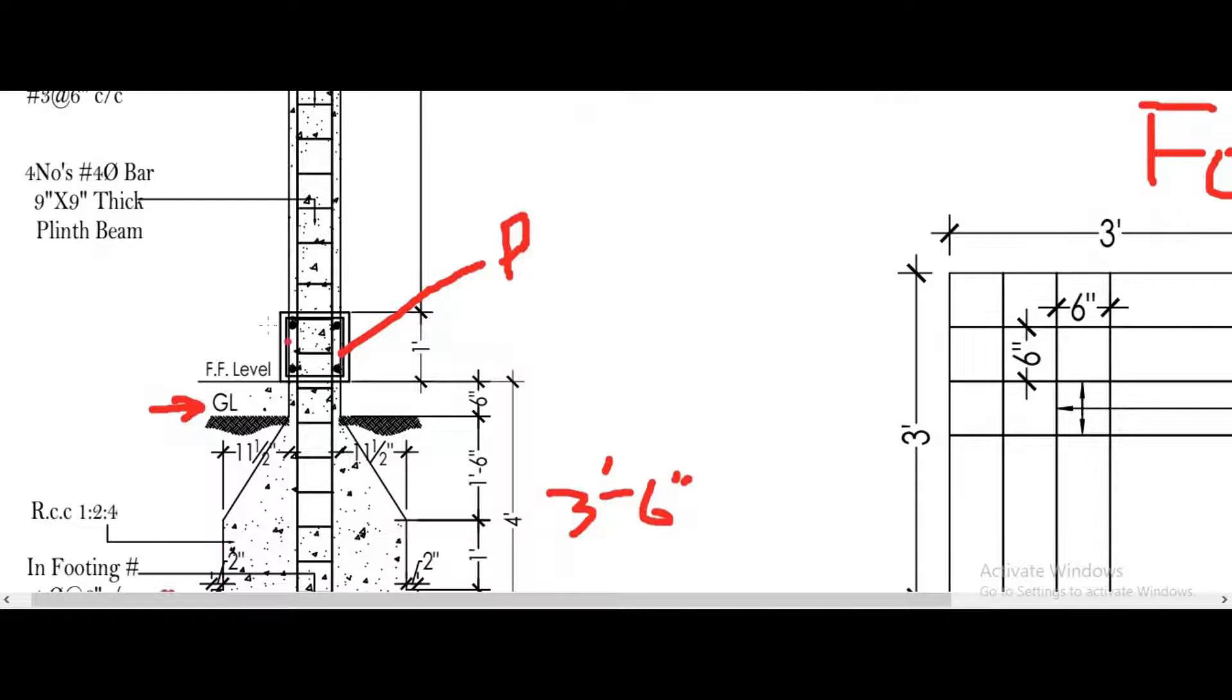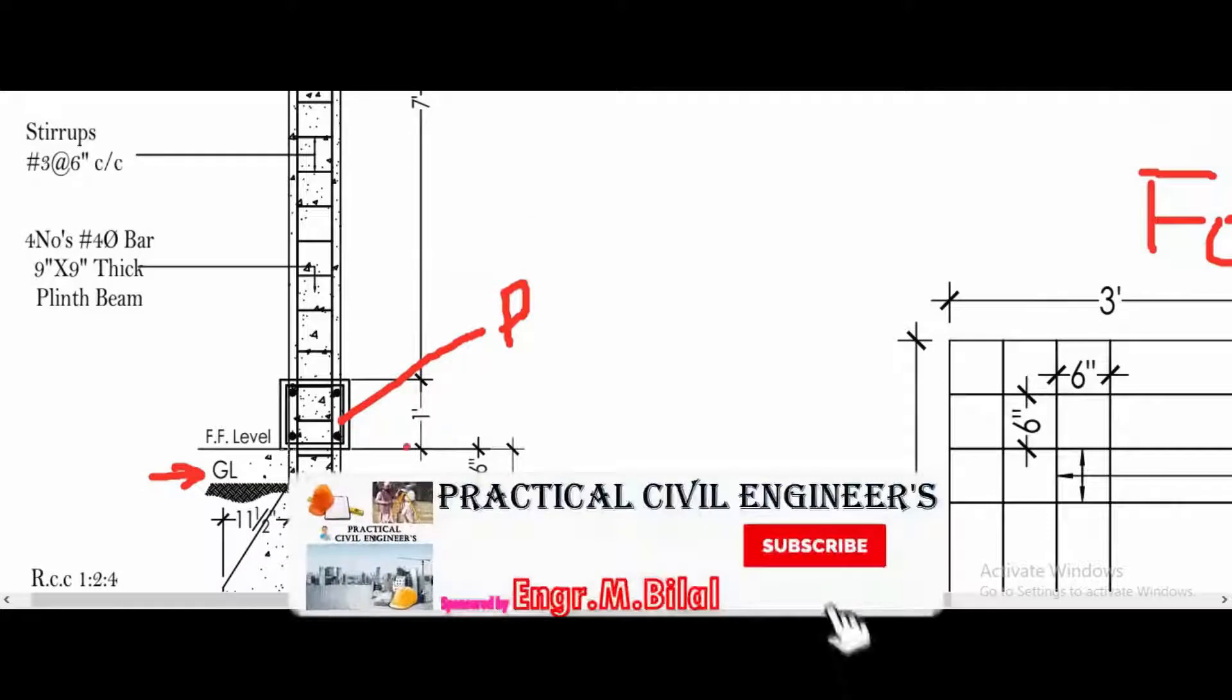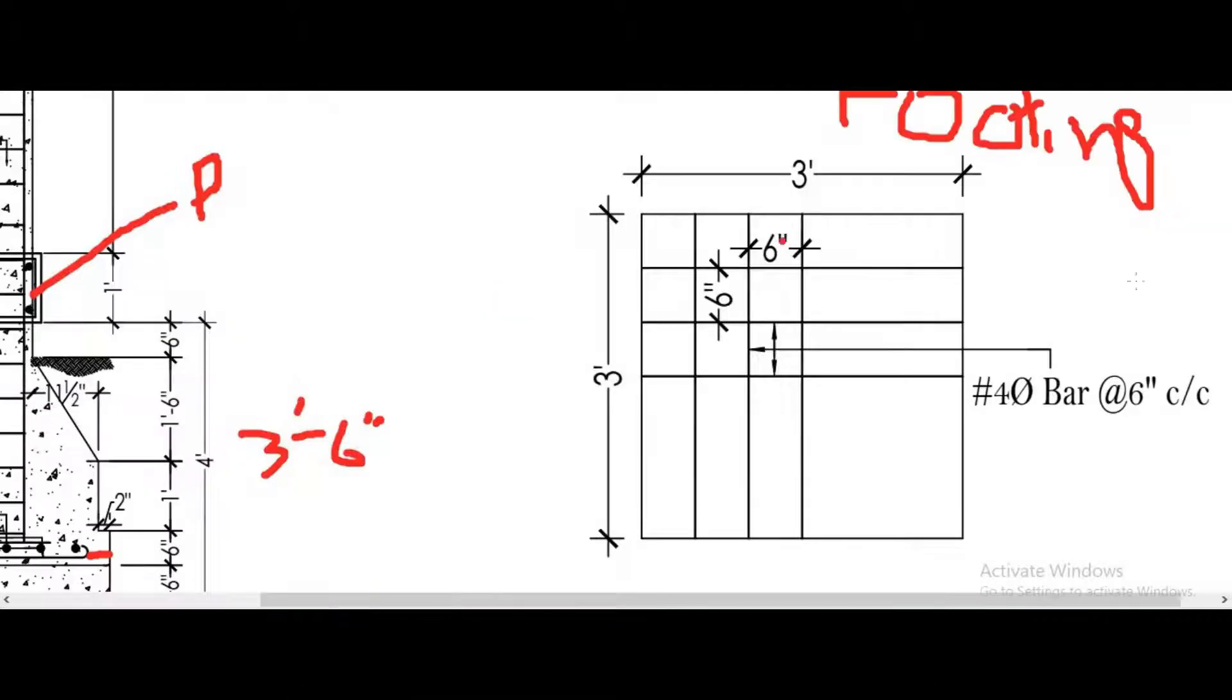This is the cross section of the plinth beam which has height and dimension of one feet multiplied by one feet, and this will support the floor level.